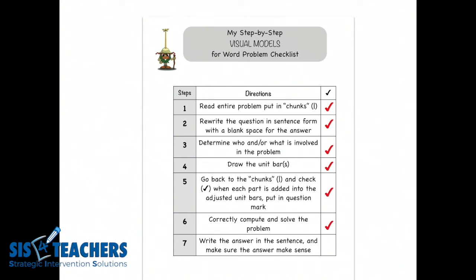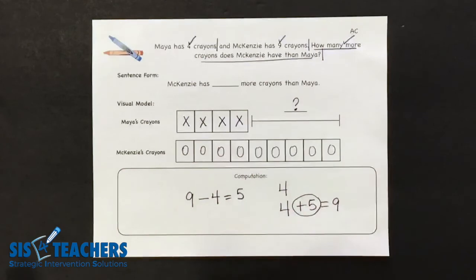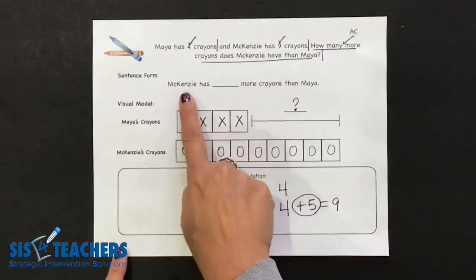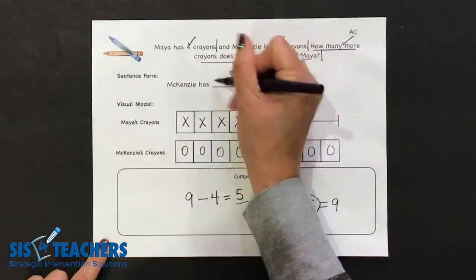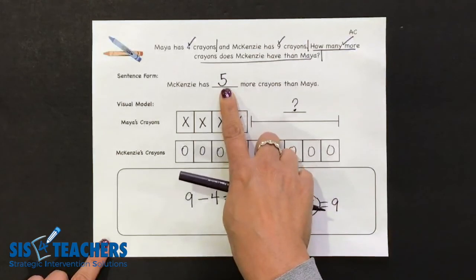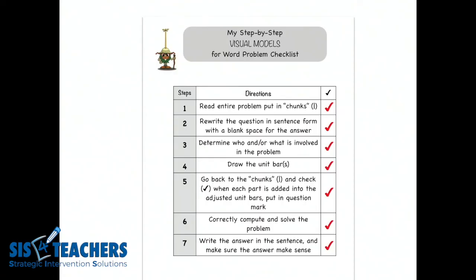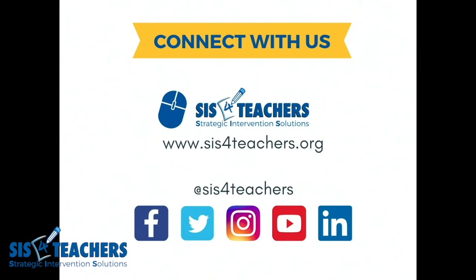The last part is to write the answer in the sentence and make sure the answer makes sense. A lot of kids do a story problem but aren't really answering what the problem asked — it wants to know how many more crayons Mackenzie has. We've figured out that there are five more crayons that Mackenzie has than Maya, which completes our answer. It's really important with additive comparison problems to use manipulatives — unifix cubes or Cuisenaire rods — because these problems will get more complex and students will eventually do multiplicative comparison problems. This is probably the most complex problem type taught in first grade.